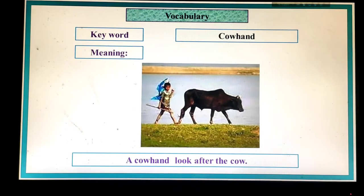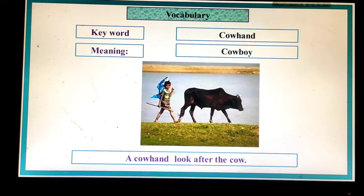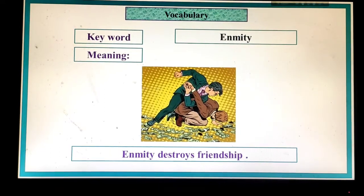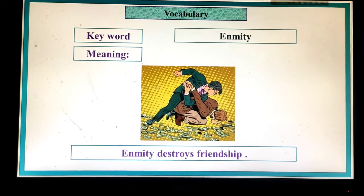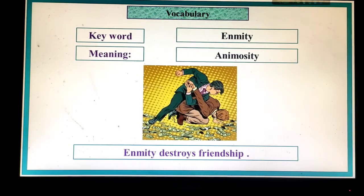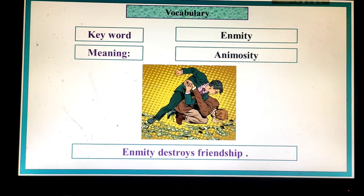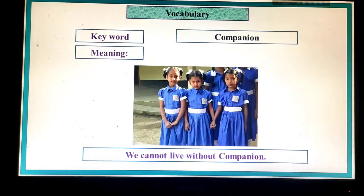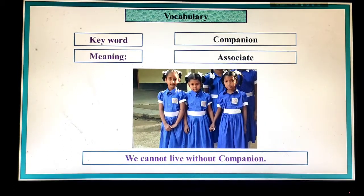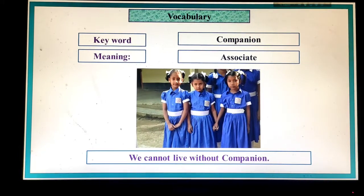Cowhand — 'cowhand' means cowboy, someone who looks after cows. For example: a cowhand took after the cow. Enmity — 'enmity' means animosity, hostility. For example: enmity destroys friendship. Companion — 'companion' means associate, a friend or partner. For example: we cannot live without a companion.